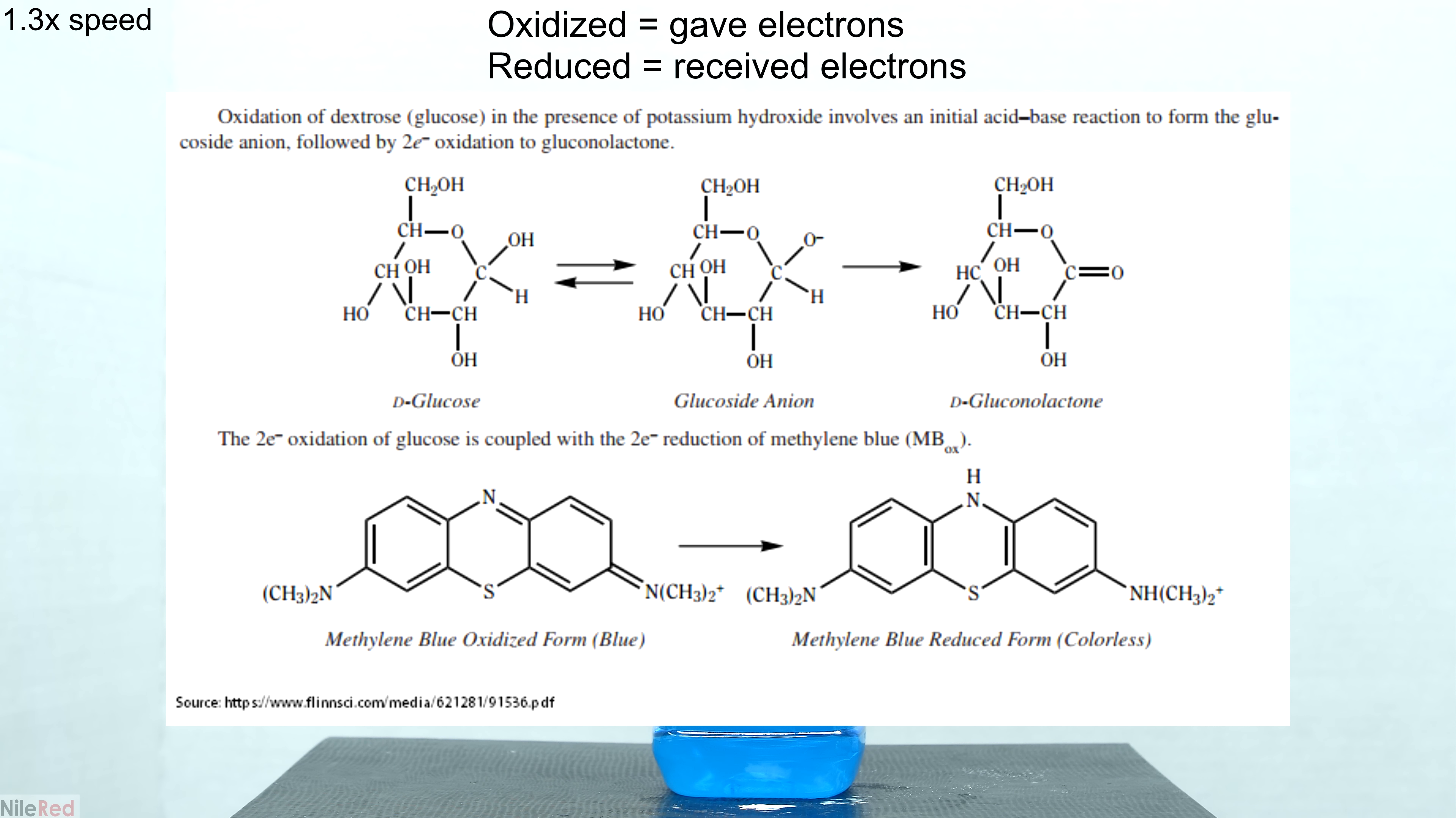The terms oxidation and reduction can be a little bit confusing but in very simple terms if something is oxidized it gives away electrons and if something is reduced it receives electrons. In this case I said the glucoside anion underwent a two electron oxidation which means it gave away two electrons. Oxidation reactions are pretty much always coupled with a reduction reaction because for a molecule to give up electrons we need something else to accept them.